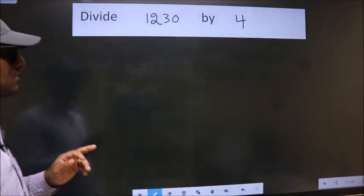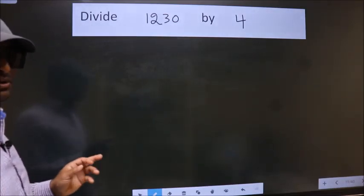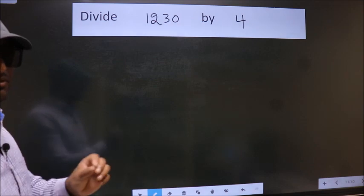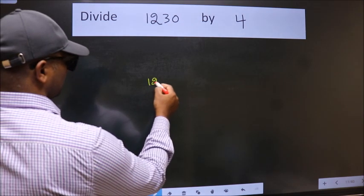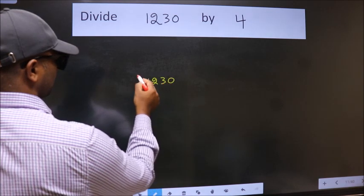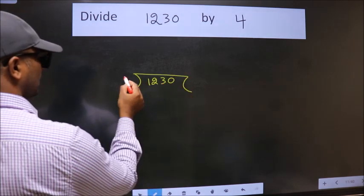Divide 1230 by 4. To do this division, we should frame it in this way: 1230 here, 4 here.